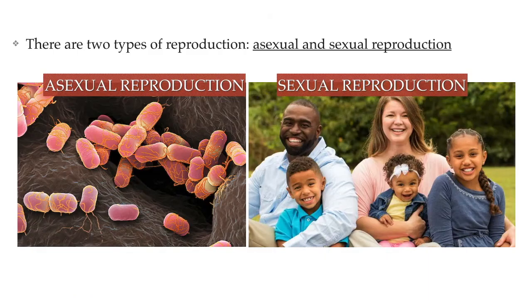There are two types of reproduction: asexual reproduction and sexual reproduction. This week we will focus on asexual reproduction, and the next week on sexual reproduction.